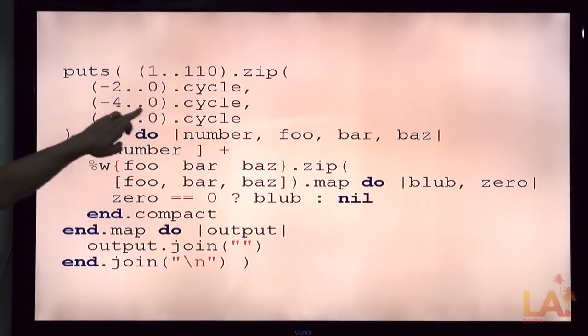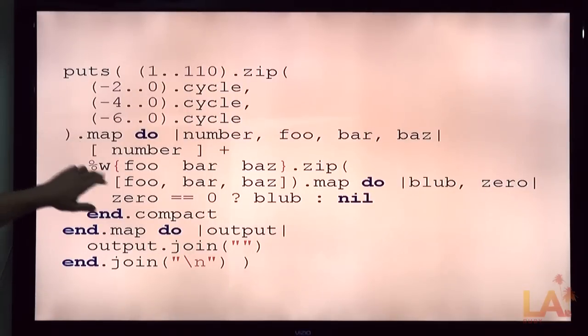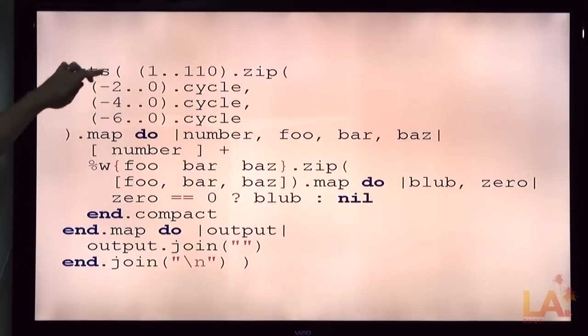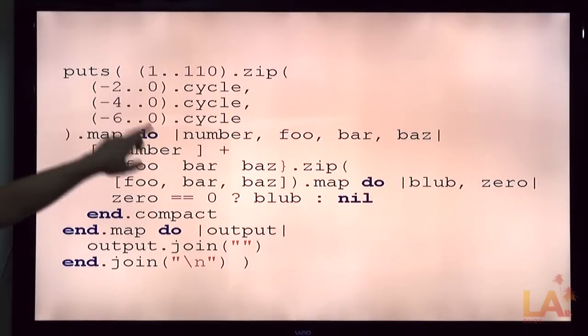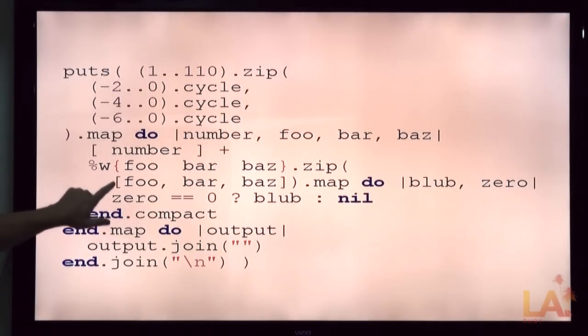Now we have three more ranges, from negative two to zero. We get cycles, so we have three enumerators. So they're going to cycle from a negative number to zero repeatedly. We're going to map that group and get four values out of it. The original number, the original cycles. And I'm naming those cycles now foobar and baz.